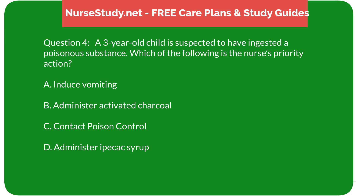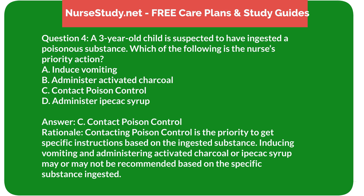Question 4: A three-year-old child is suspected to have ingested a poisonous substance. Which is the nurse's priority action? A) induce vomiting, B) administer activated charcoal, C) contact poison control, D) administer ipecac syrup. Answer: C) contact poison control. Rationale: Contacting poison control is the priority to get specific instructions based on the ingested substance. Inducing vomiting, activated charcoal, or ipecac syrup may or may not be recommended depending on the specific substance.